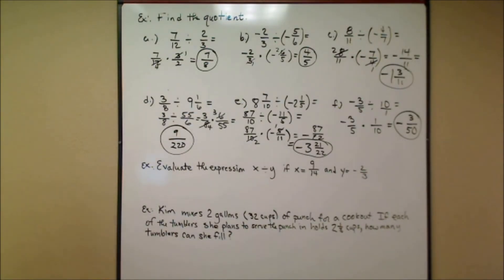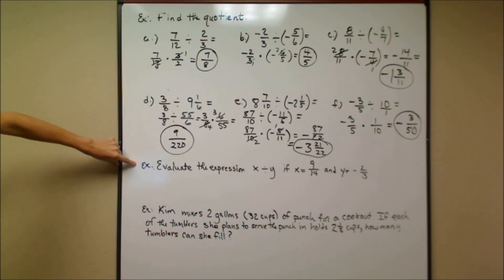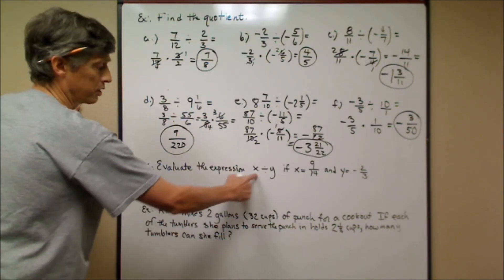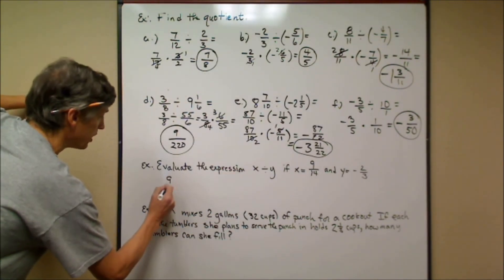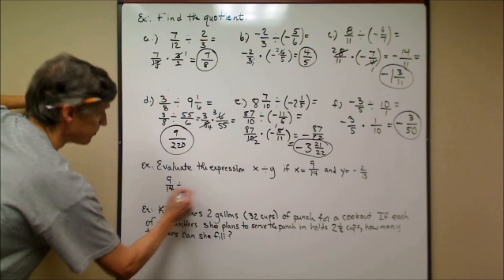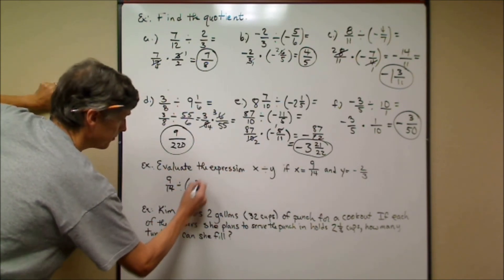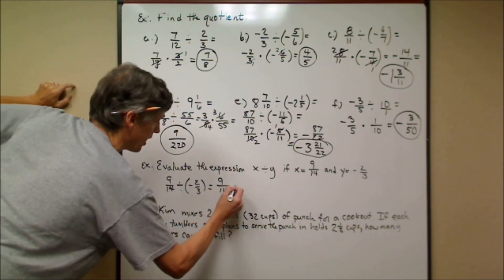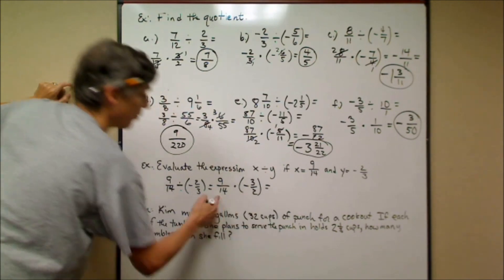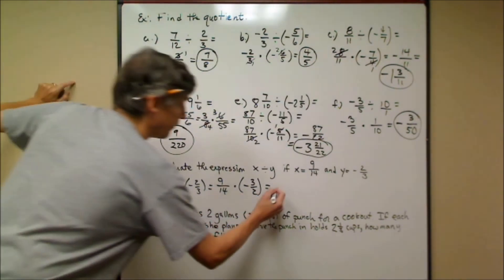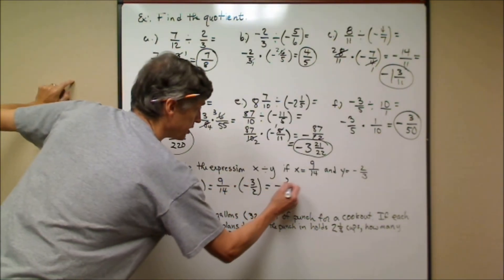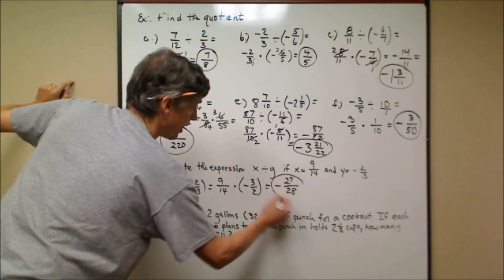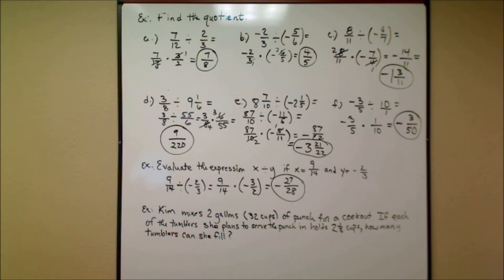They might present the problem as an expression: evaluate x divided by y, where x = 9/14 and y = −2/3. Substitute in: 9/14 divided by −2/3, which is 9/14 times the reciprocal −3/2. Positive times negative means the answer is negative. Nothing cross-cancels, so multiply: 9 times 3 = 27 on top and 14 times 2 = 28 on the bottom. The answer is −27/28, which is already in simplest form.